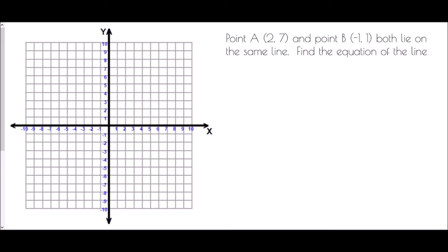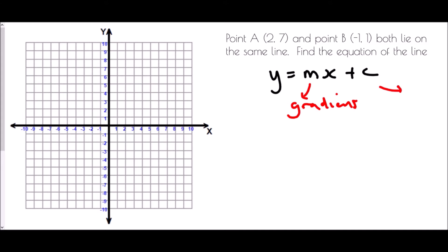To find the equation of a straight line, we need to think about y equals mx plus c. As a reminder, m is the gradient of the line and c is the y-intercept.